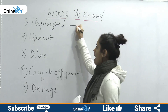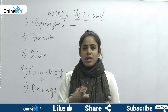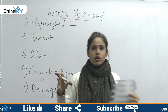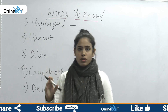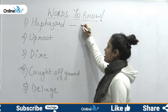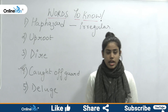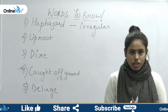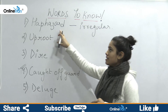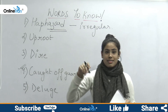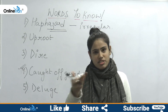Let's start with number 1: haphazard. If you look at the image, everything was so irregular because of all this happening. Everything was so mishappen, so irregular. Haphazard means irregular, chaotic — chaos was created. If there is something hazardous, then it is haphazard and irregular.